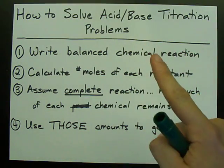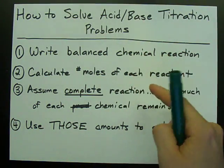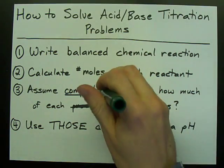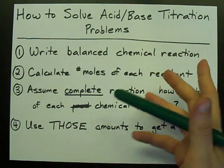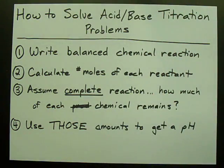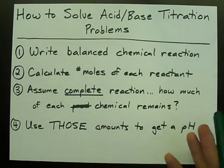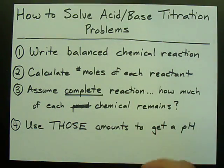Write a balanced chemical reaction. Find the number of moles of each reactant. Assume that your reaction goes completely. Determine how much of each chemical remains or how much did you produce. And then use those amounts to get a pH. So let's do this.